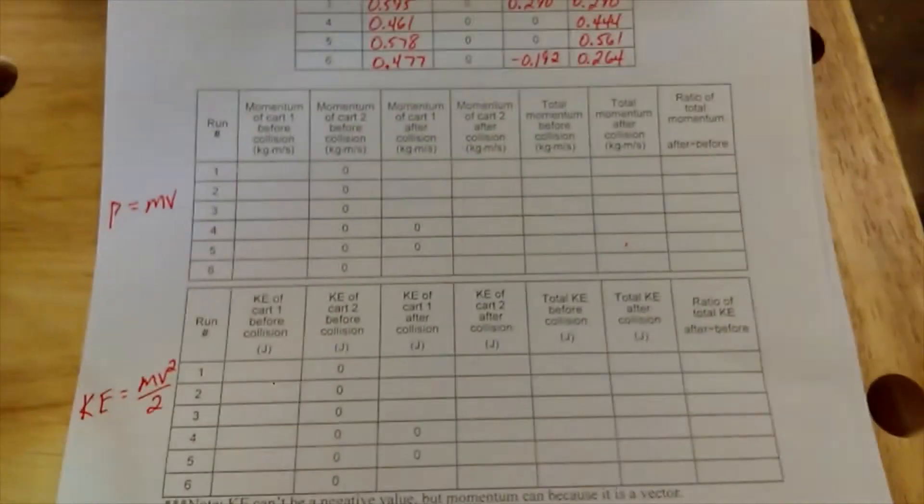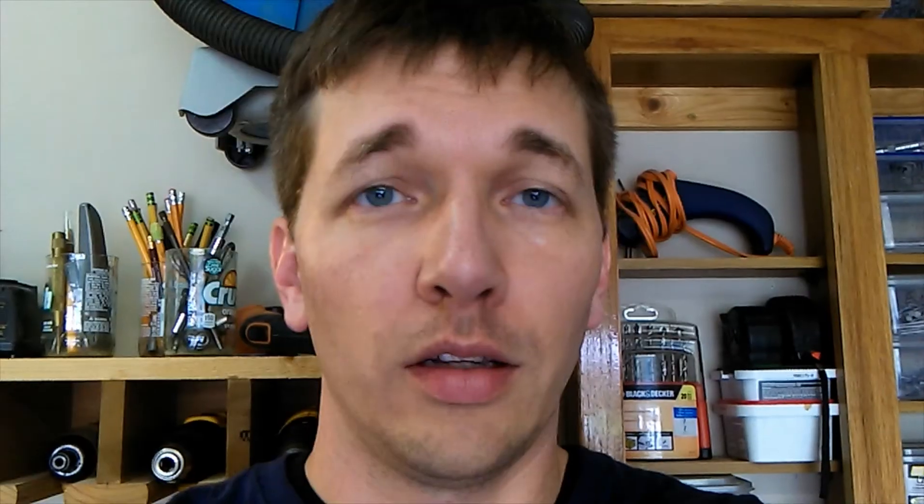I hope this lab gives you some idea about the difference between inelastic collisions that we started with, where two objects collided and stuck together, and elastic collisions at the end where we used magnets and the two cars collided but didn't actually physically touch or stick together. Ideally both conserve momentum, but only elastic collisions conserve kinetic energy. As always, if you have questions or need any help, reach out to me. I'm here to help. Take care and I'll talk to you later.